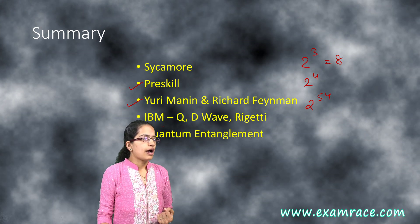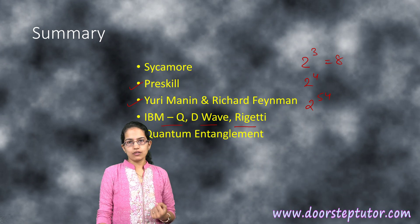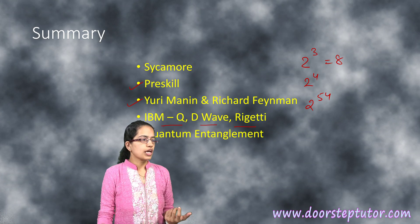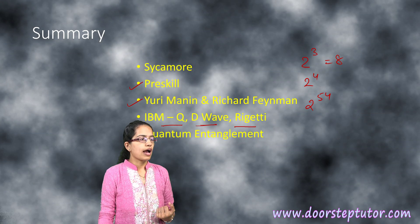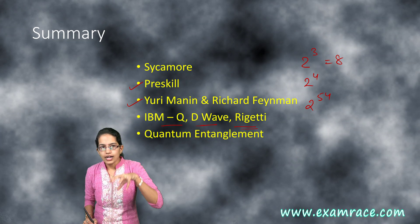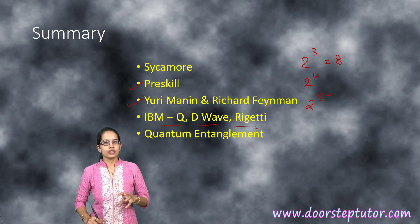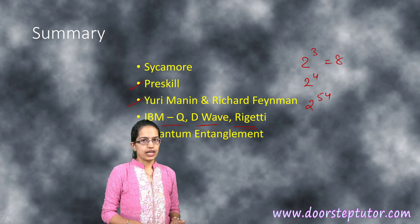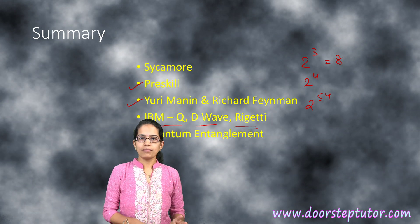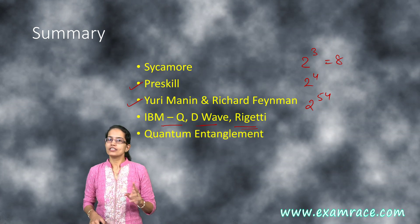As of now, you have three companies that are working with quantum computers: IBM Q computers, D-Wave, and Rigetti. Similarly, under this whole idea of quantum supremacy, there are two things that we understand. The first is quantum entanglement and the second is superposition.